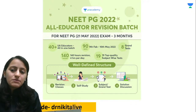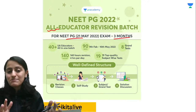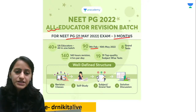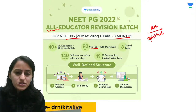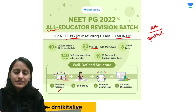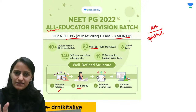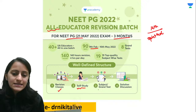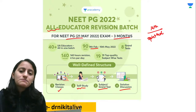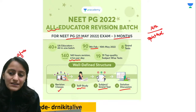Let me tell you about the all-in-one educator revision batch — a three-month batch targeting the NEET PG exam. Now that the exam is postponed, we have three months for revision. Classes start from the 14th, beginning with ophthalmology. You'll have quick revision classes, self-study breaks, MCQ practice, tests, and discussion — all in just four hours per day.